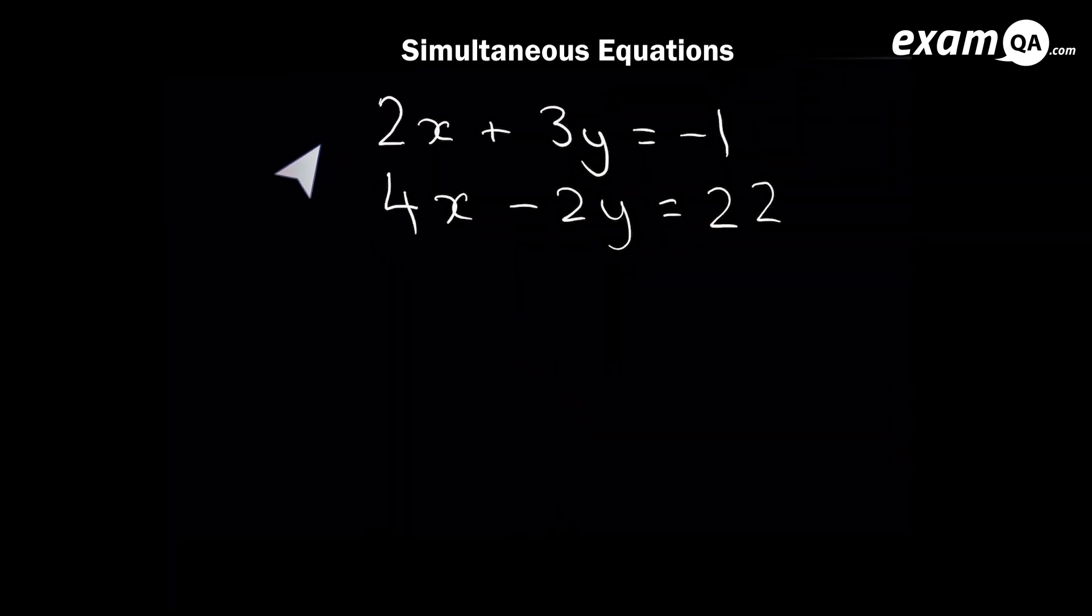So here we've got another set of simultaneous equations. So let's try and make the x's the same as before. Now, you could times them by each other. So the top you've got 2x and the bottom you've got 4x. So we could go ahead and times the top one by 4 and the bottom one by 2, making them both into 8x. But you might have spotted an easier way to make them both the same. The 2x can just be multiplied by 2, making the top one 4x. And the bottom one can be left the same, and they'll both be 4x. And that will probably be a little bit more simpler. So let's go ahead and do that.